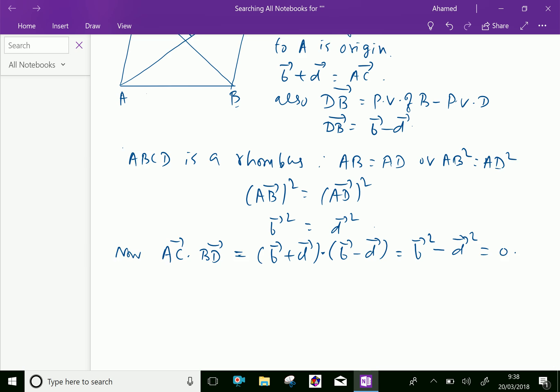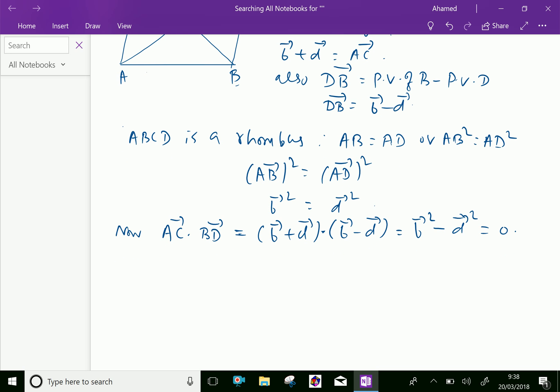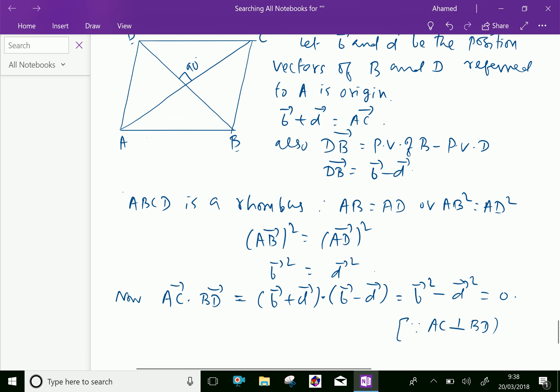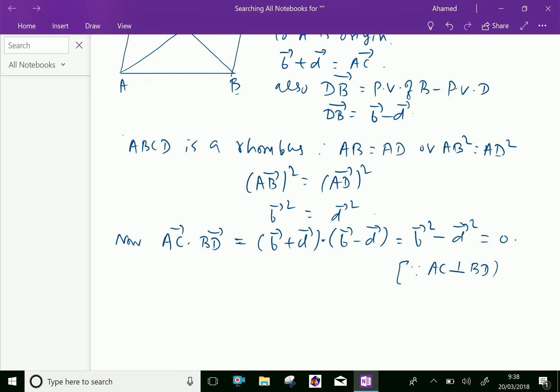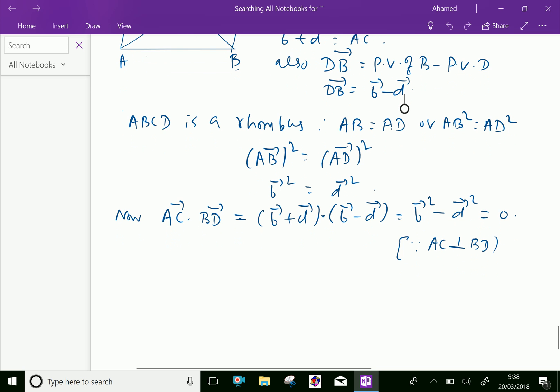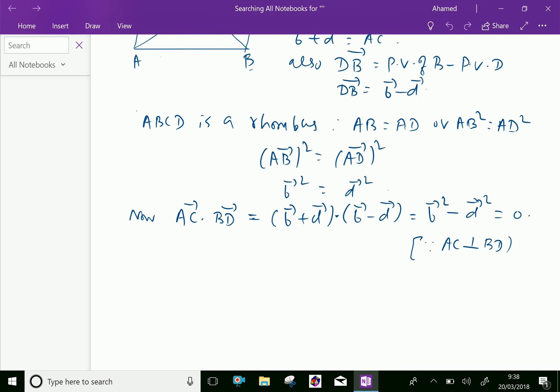which is equal to 0. Since AC is perpendicular to BD, because we got vector B squared minus vector D squared equal to 0, therefore we can say AC is perpendicular to BD.